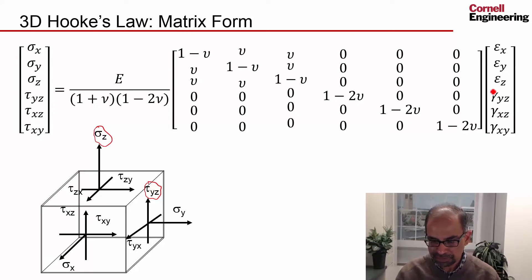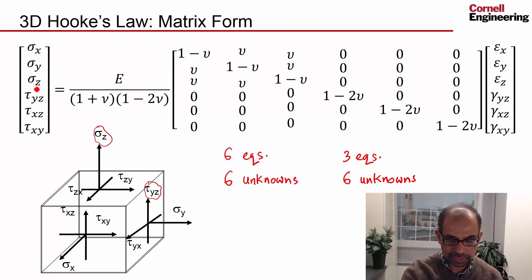We have six equations here but we have added six unknowns: the three normal strains and the three shear strains. Recall that from the 3D equilibrium equations we have three equations and six unknowns: the three normal stresses and the three shear stresses. We still have more unknown functions than we have equations.